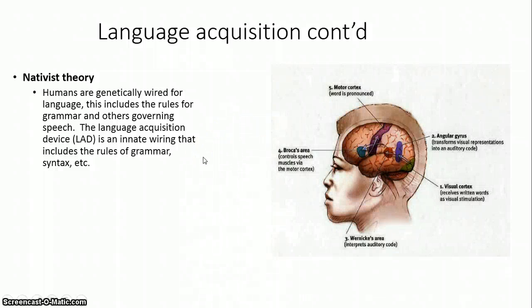And if you look at the diagram that is on the screen, you would see that certain areas of the brain are now highlighted. For example, you have the visual cortex that receives written words and is responsible for visual stimulation. Then there is the angular gyrus, and that area of the brain transforms visual representations into an auditory code. So what you see, you can articulate, you can represent it with words or produce it with words.